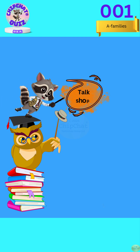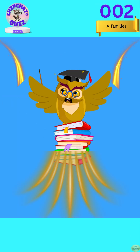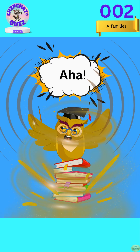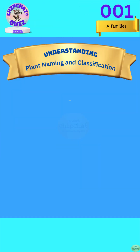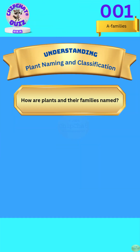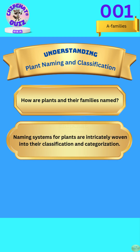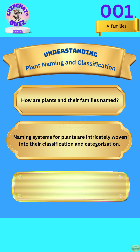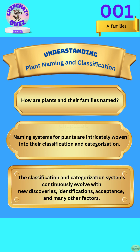Talk shop. How are plants and their families named? Naming systems for plants are intricately woven into their classification and categorization. The classification and categorization systems continuously evolve with new discoveries, identifications, acceptance, and many other factors.